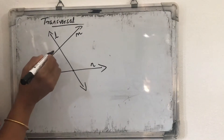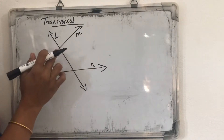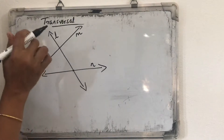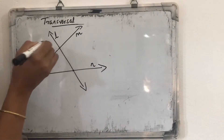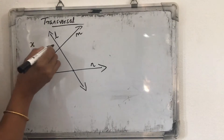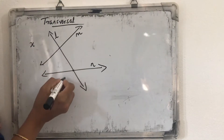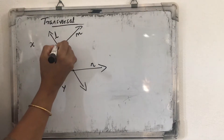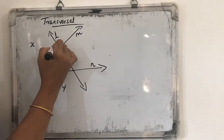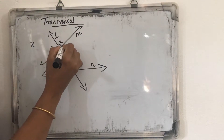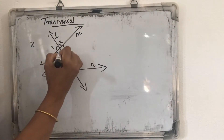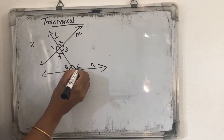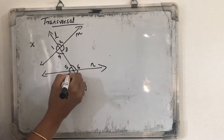Suppose, how many angles are formed at this intersecting point? Four angles. In this also, four angles are formed. Suppose this intersecting point is named X, and this intersecting point is named Y. Here four angles are formed at each point. We can name them: this angle is 1, here this angle is 2, 3, and 4. Just like this, angle 5, 6, 7, 8.